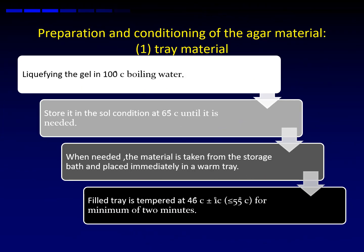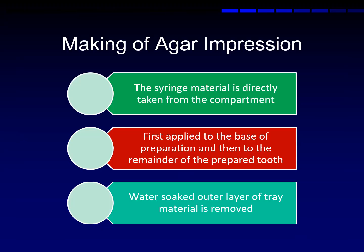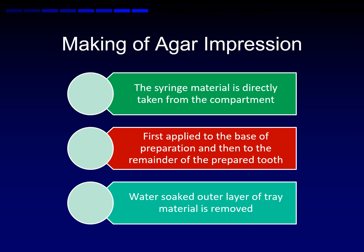Let us see how the agar impression is made. For making agar impression, a special kind of tray is used called water cool trays. In the water cool tray, one side there is an inlet and the other side there is an outlet. Once the tray is loaded with the material, we have to press the tray into the patient's mouth. Then pass cool water from the inlet. Because of the temperature variation, the agar material starts to become gel. The water that comes out of the outlet will be hot, as the temperature difference causes the agar to become gel, which transmits the temperature and makes the water warm or hot.